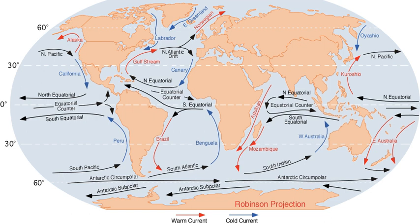In recent times, around the world sailing competitors make good use of surface currents to build and maintain speed. Ocean currents are also very important in the dispersal of many life forms. An example is the life cycle of the European eel. Ocean currents are important in the study of marine debris, and vice versa. These currents also affect temperatures throughout the world.